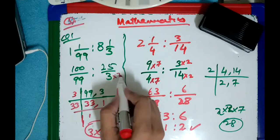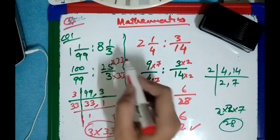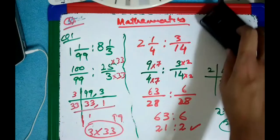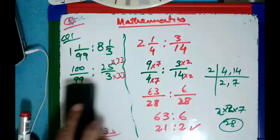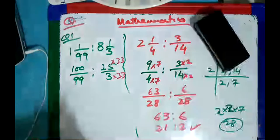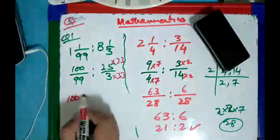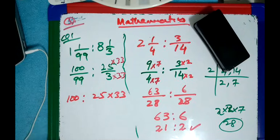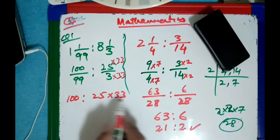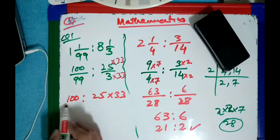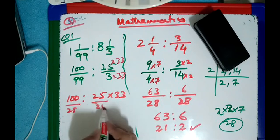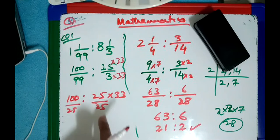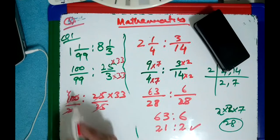33. So multiply this numerator also by 33. Now the next step is we remove the denominators. Finally we get 100 is to 25 × 33. But you do not need to multiply first — you can divide by the same number. Divide 100 and 25 by 25: 100 ÷ 25 = 4, and 25 cancels. So the answer is 4 is to 33.